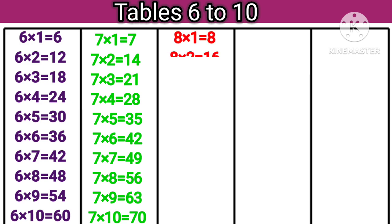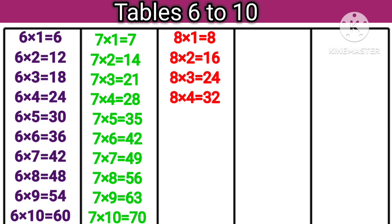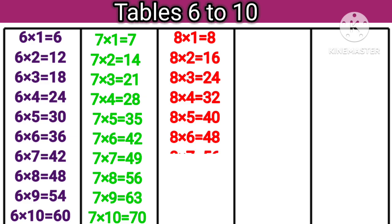8 ones are 8, 8 twos are 16, 8 threes are 24, 8 fours are 32, 8 fives are 40, 8 sixes are 48, 8 sevens are 56, 8 eights are 64.